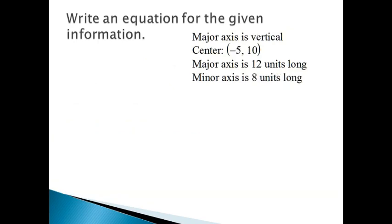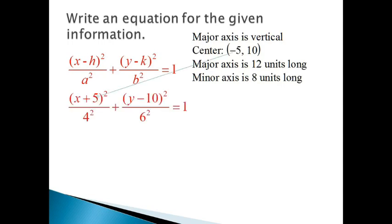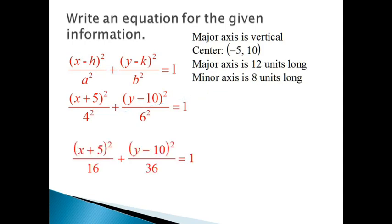Here's another example where the major axis is vertical, so the larger value goes under y. Starting with the basic equation: x minus negative 5 is x plus 5, and y minus 10 stays as y minus 10. The major axis is 12 units long, so b = 6, giving 6 squared. The minor axis is 8 units long, so a = 4, giving 4 squared. This results in x plus 5 squared over 16 plus y minus 10 squared over 36 equals 1.